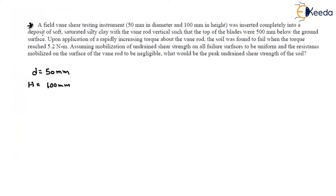The vane was inserted completely into a deposit of soft saturated silty clay. As you can see in the question, it is completely inserted — that means both top and bottom surfaces are in contact with the soil. The vane rod is vertical such that the top of the blades were 500 mm below the ground surface. Upon application of rapidly increasing torque about the vane rod, the soil was found to fail at a torque of 5.2 Nm.